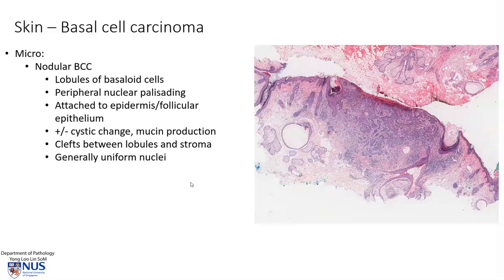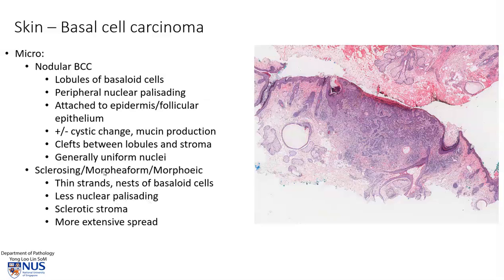I just want to mention one other subtype here: the sclerosing, also known as morpheaform or morphic basal cell carcinoma. This appears a little bit different. Instead of these rather thick, large islands or nests, we have thinner strands and smaller nests of basaloid cells with less nuclear palisading and much more sclerotic or fibrotic stroma.